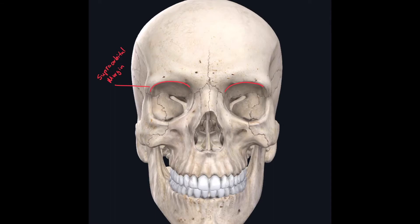Just above the supraorbital margin, you can see this elevated area — that kind of darkened shadow. This elevated part, just superior to the supraorbital margin, is called the supraciliary arch, also parented to the frontal bone. The supraciliary arch is indicated in blue, and the supraorbital margin is indicated in red.